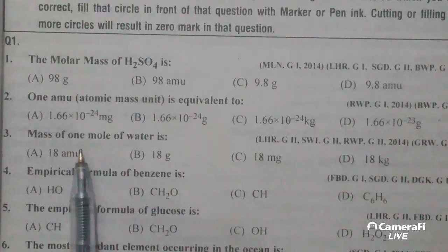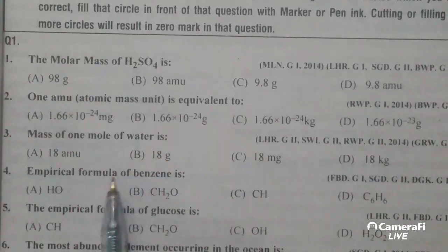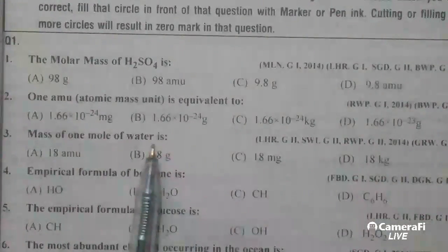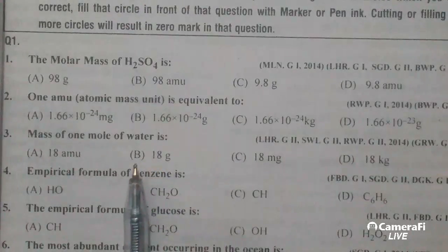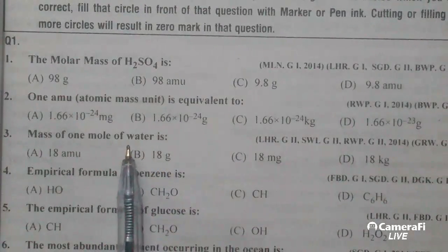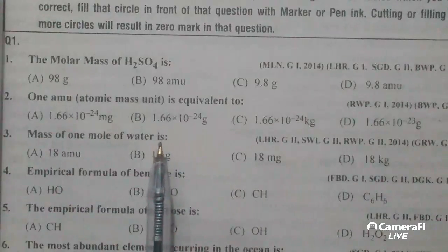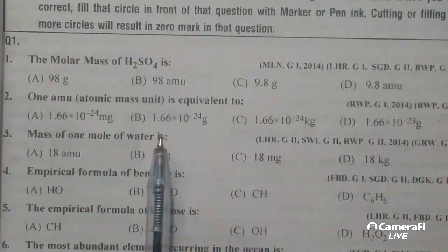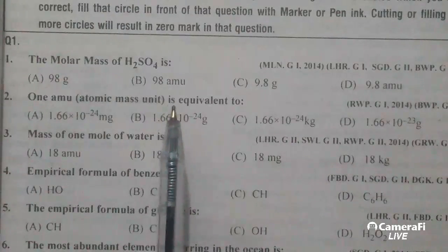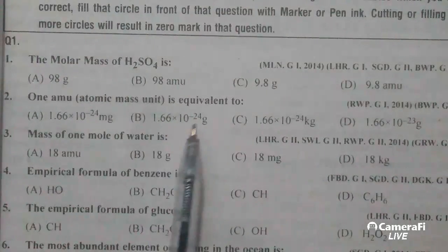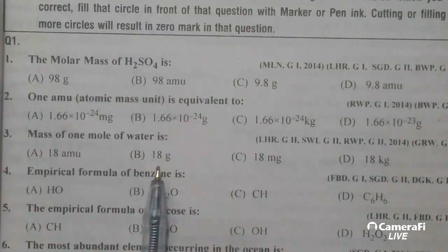The mass of one mole of water is 18 grams. Molar mass of H2O. It has two hydrogen atoms, mass is 1, two multiplied by 1 is 2. Oxygen has 16. Two plus 16 is 18, so 18 grams.